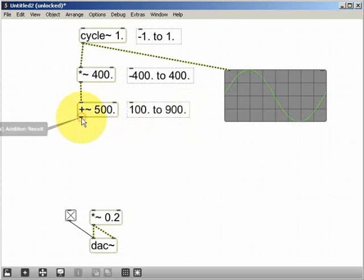Now we can't send that signal to the DAC for two reasons. Firstly, it only has a frequency of 1 Hertz, which is too low to be audible anyway.